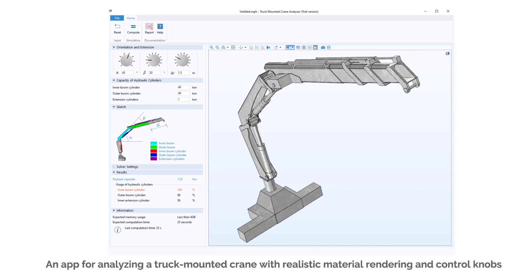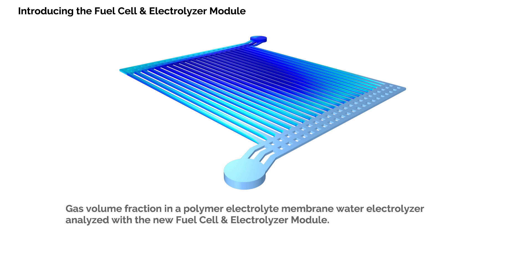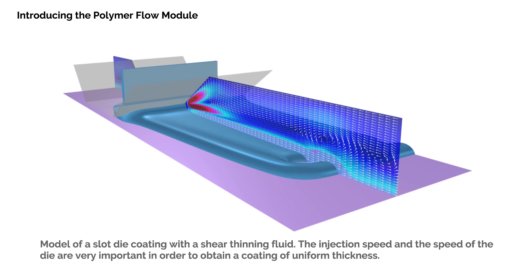This is very useful when you are selecting any particular domain. There is also a huge update in the Application Builder with many new settings in the application window. Three new physics modules have been added: the Fuel Cell and Electrolyzer module, and the Polymer Flow module.